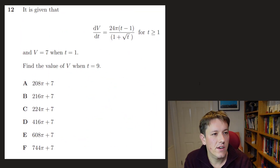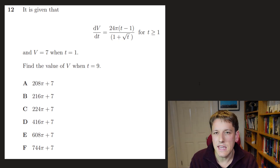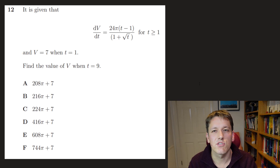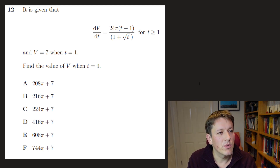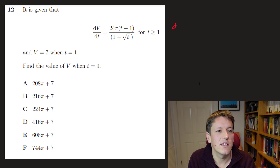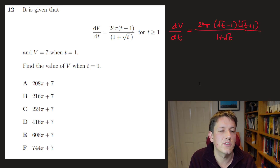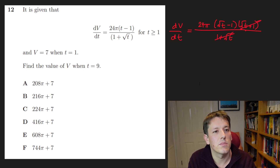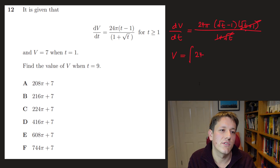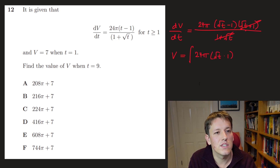In question 12 we've got a differential equation, and we're only meant to use AS methods. We've got some initial conditions and want to find v when t = 9. A difference of two squares crops up here — t − 1 can be written as (√t − 1)(√t + 1), and the denominator has (1 + √t), so those cancel, leaving a simple integral: v = 24π ∫(√t − 1) dt.